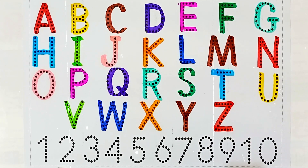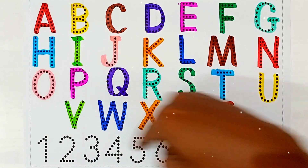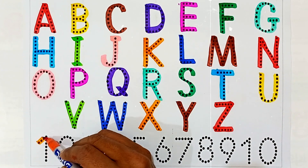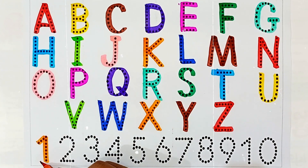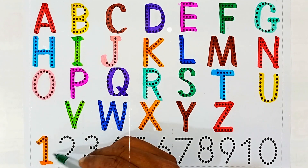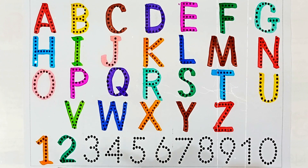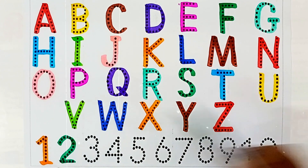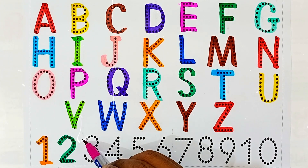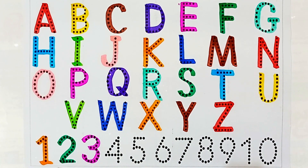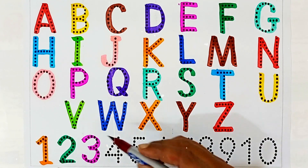Ab hum number writing karange. Okay. One — this first number is one, this number name is one. Two — this is number two, this number name is two. One ke baad two hota hai, is ke baad aata hai three — this number name is three.